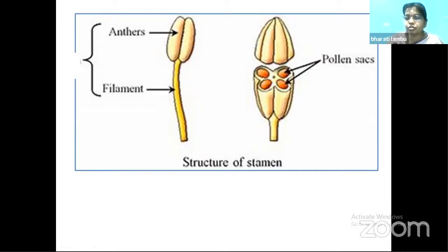Each microsporangium forms one pollen sac. A bilobed anther therefore has four pollen sacs containing pollen grains, which are numerous. Now we will study the structure of microsporangia. Microsporangia is a male reproductive structure pertaining to the anther. It generally appears circular in outline and has four wall layers: epidermis, endothecium, middle layers, and tapetum. Epidermis, endothecium, and middle layer protect the microsporangia, while tapetum nourishes the microsporangial cells.